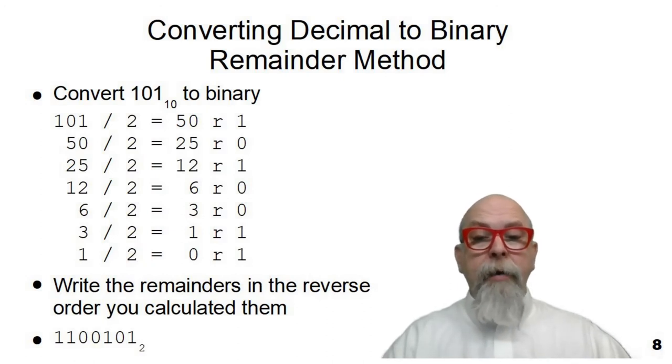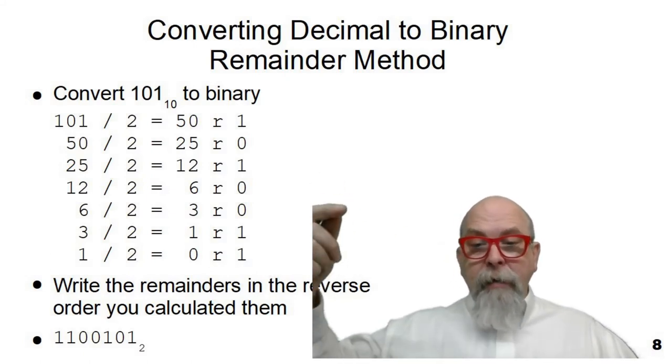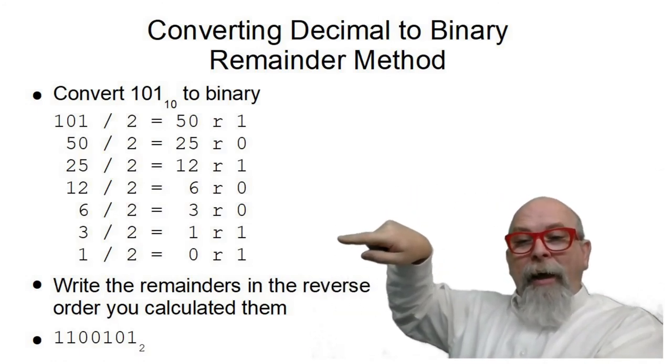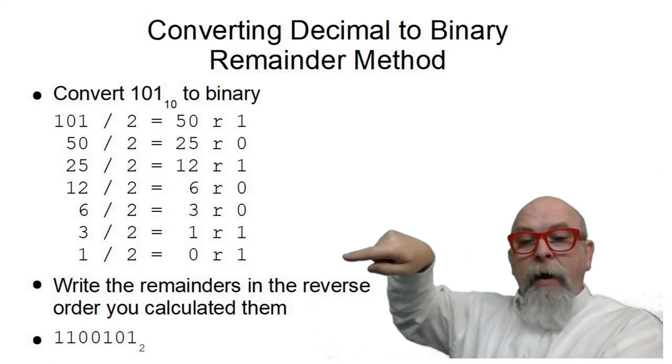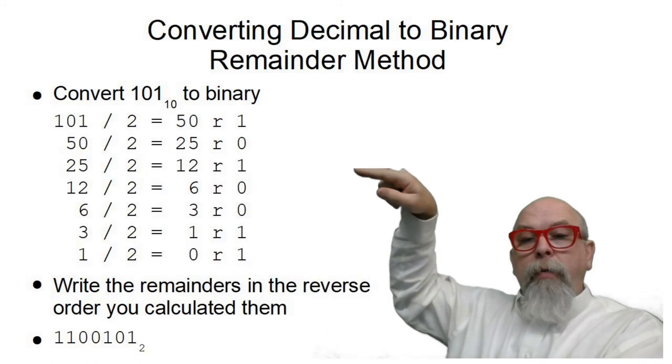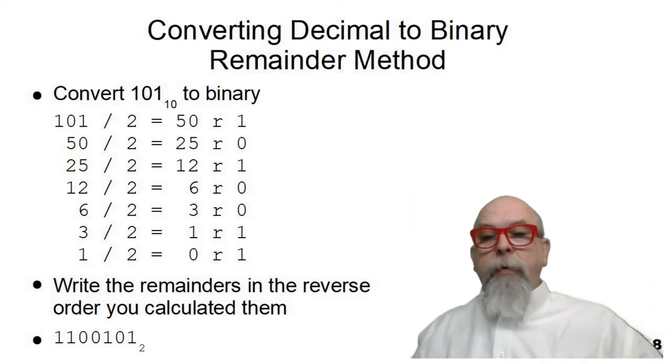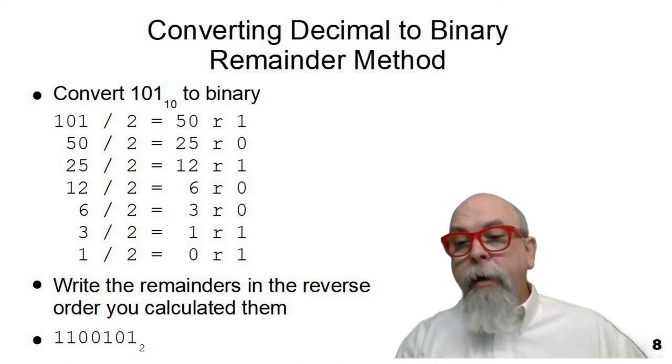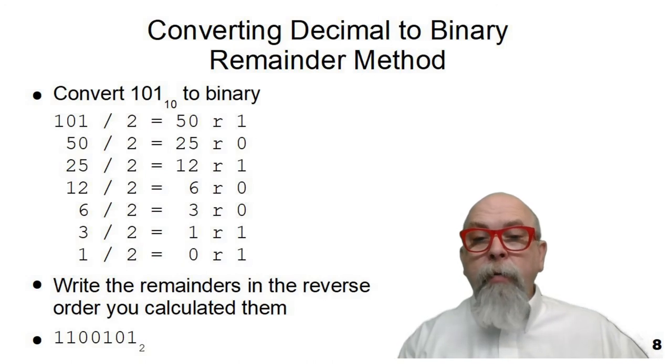Get a one remainder one because two goes into three one times with one remainder. And then we bring the one down and get zero remainder one. Once we're done with that process, we write the remainders down in backwards orders from the first one we found will be the last one. So we start at the bottom of our list and write 1100101. So 1100101 binary is 101 decimal.